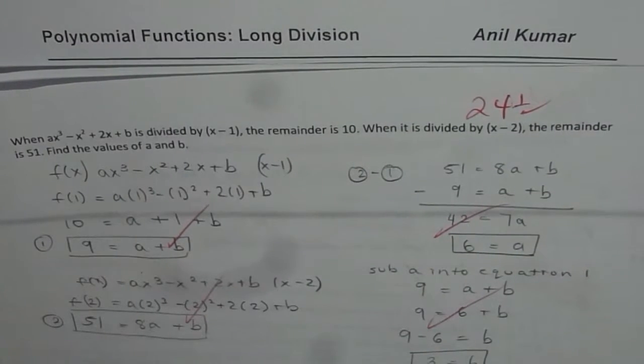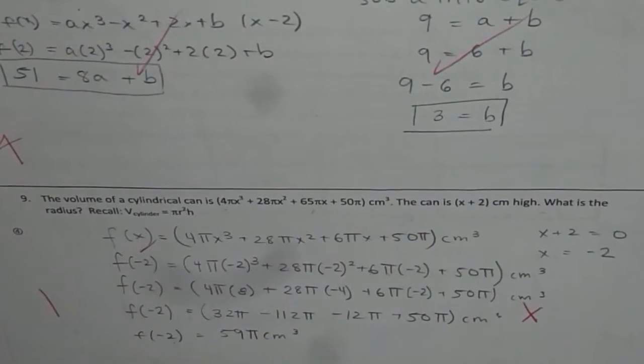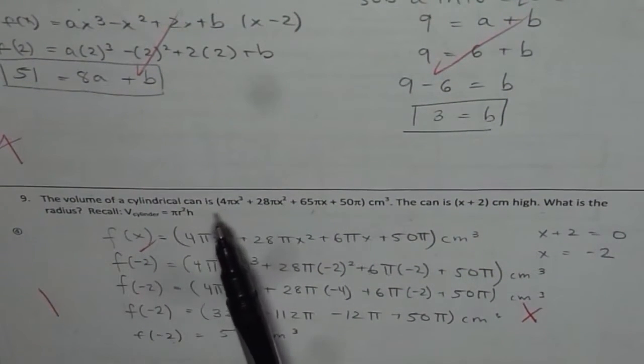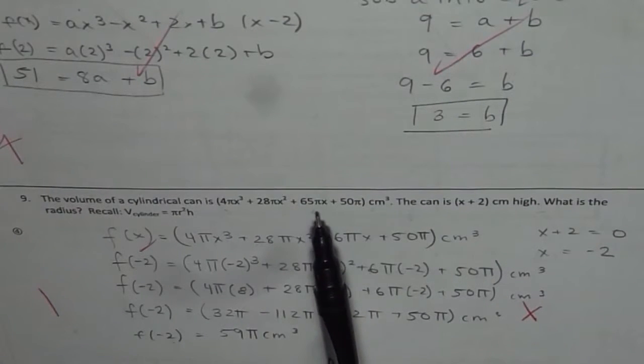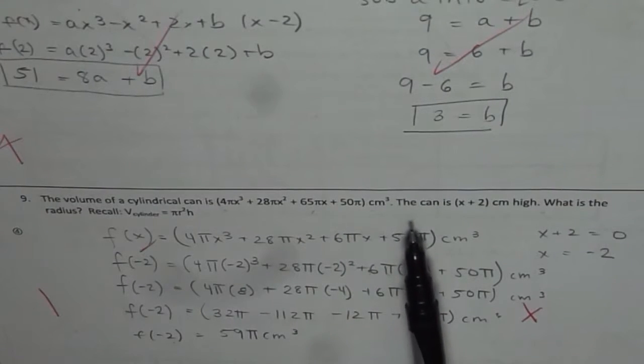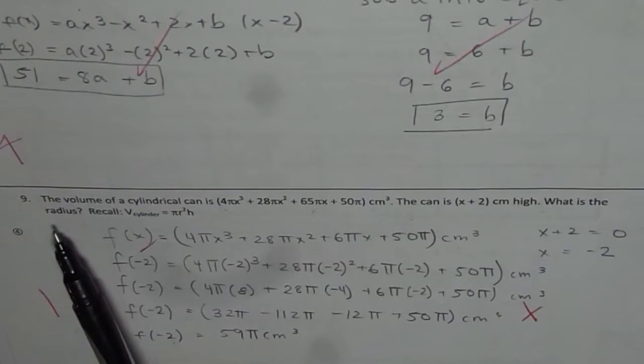In this video we will discuss question number 9. The volume of a cylindrical can is 4πx³ + 28πx² + 65πx + 50π cm³. The can is (x + 2) cm high. What is the radius?